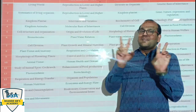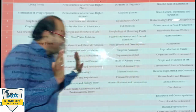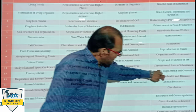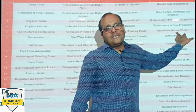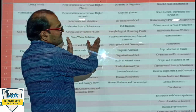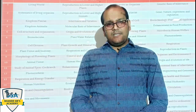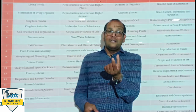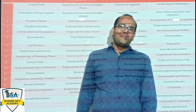इसका मतलब 2 unit कम हुई हैं — आपको लगता होगा कि 2 unit old syllabus में से गायब कर दी हैं, लेकिन ऐसा नहीं है दोस्तों। जो पुराना syllabus है उसको same रखा है, कोई change नहीं है। आपको ऐसा लगता होगा कि Animal Husbandry वाला unit completely निकाल दिया है — उसमें थोड़ा doubt है, मतलब कुछ part हटाया है। एक बात मैं आपको बताना चाहूंगा कि topic-wise distribution काफी vast कर दिया है, deepness काफी बढ़ा दी है।